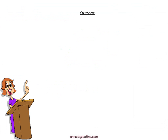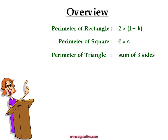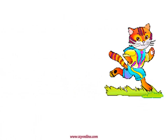Before we conclude, let's have an overview. Perimeter of a rectangle is equal to 2 times L plus B, where L is the length and B is the breadth or width of the rectangle. Perimeter of a square is equal to 4 times S, where S is any side of the square. Perimeter of a triangle is given by the sum of all three sides. Circumference of a circle is equal to 2πR, where pi is equal to 3.14 and R is the radius. Finally, perimeter of any closed figure is equal to the sum of the measure of all its sides. This brings us to the end of today's session. Goodbye and take care.